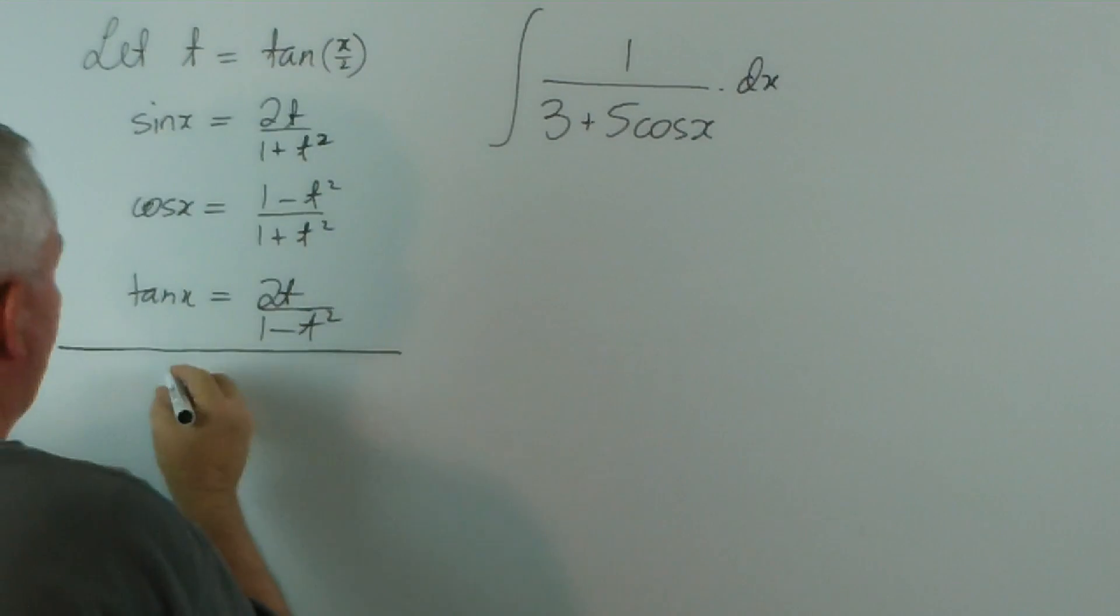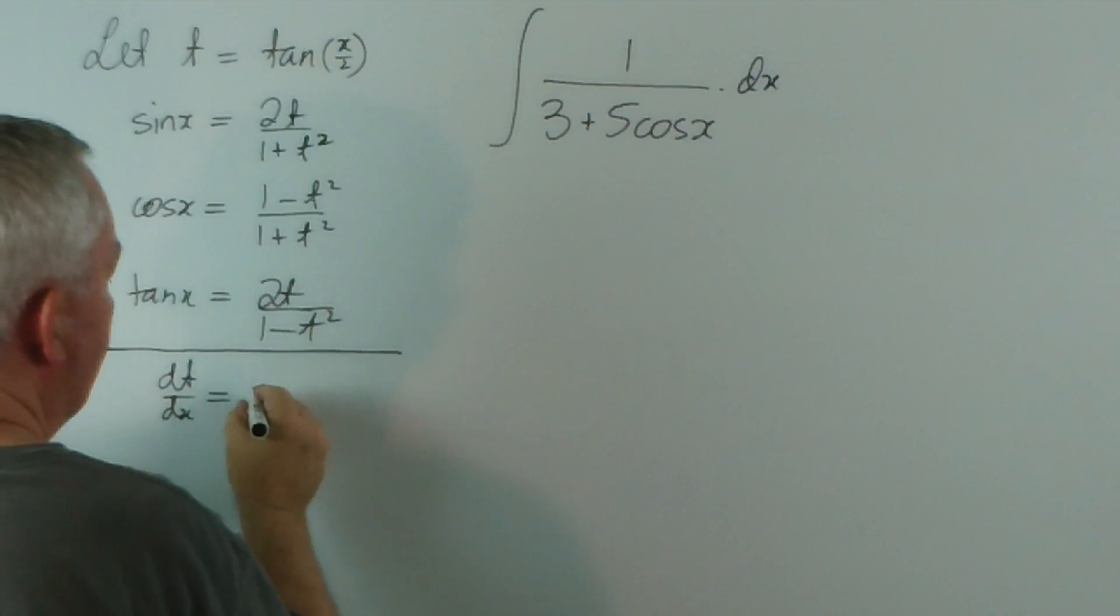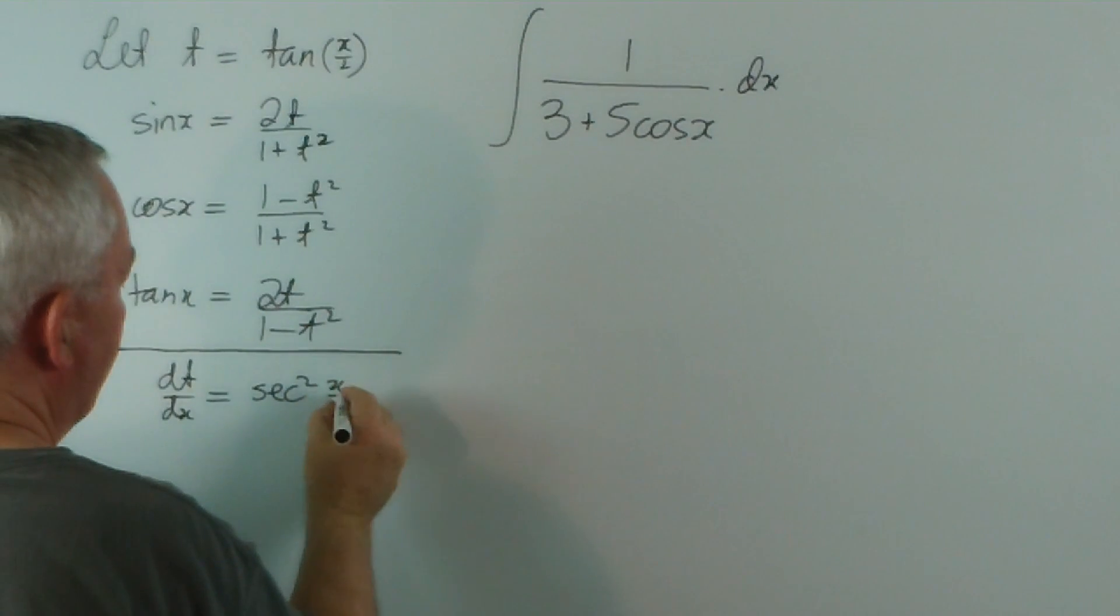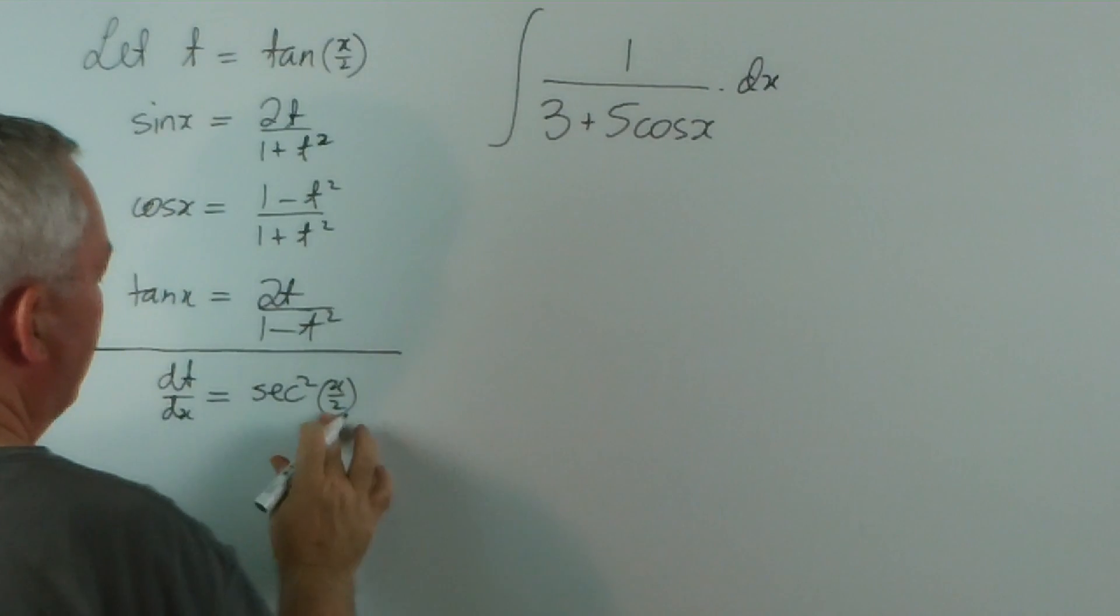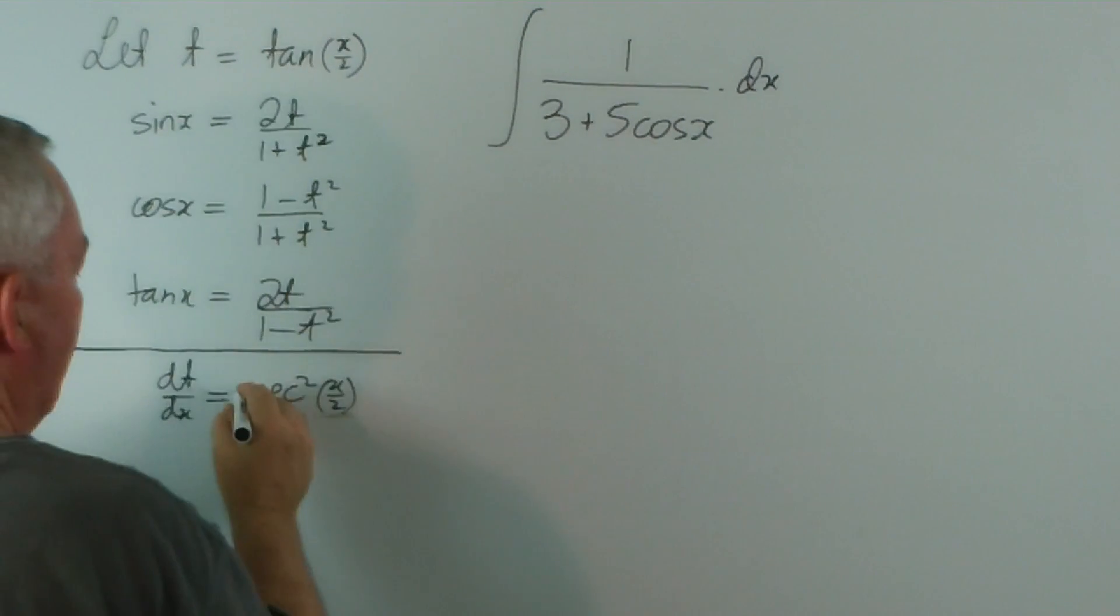If I find the derivative here, I get dt/dx is the derivative tangent, which is sec squared x/2, times the derivative of x/2, which is a half.